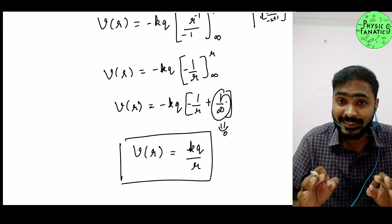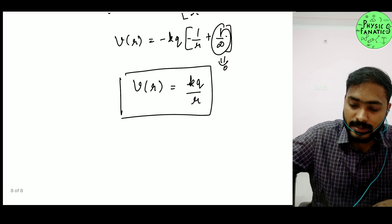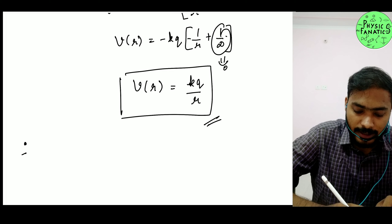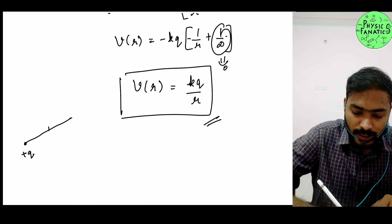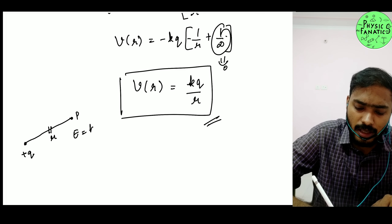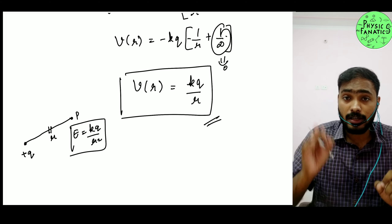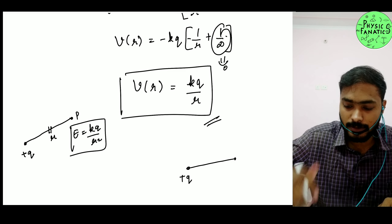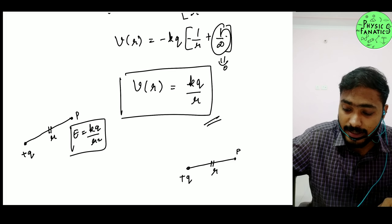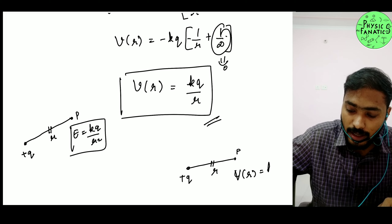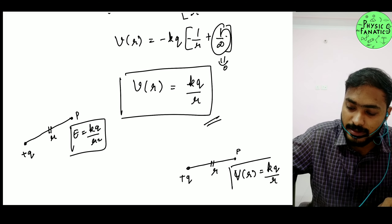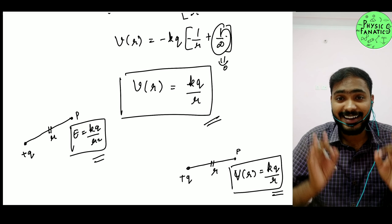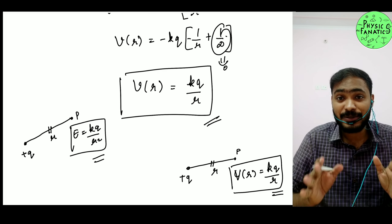There will be no direction because it is a scalar quantity. So the important result is: if you have a positive Q charge and need to find electric field at distance R, that is E = KQ/R². Similarly, if you need to find electric potential at distance R due to a point charge Q, that is simply V = KQ/R. The key difference: electric field goes as 1/R², while electric potential goes as 1/R.